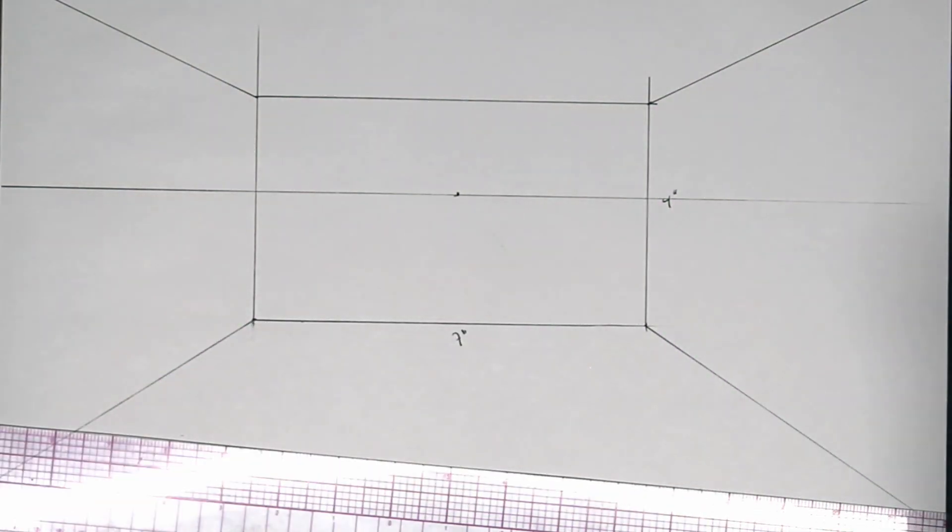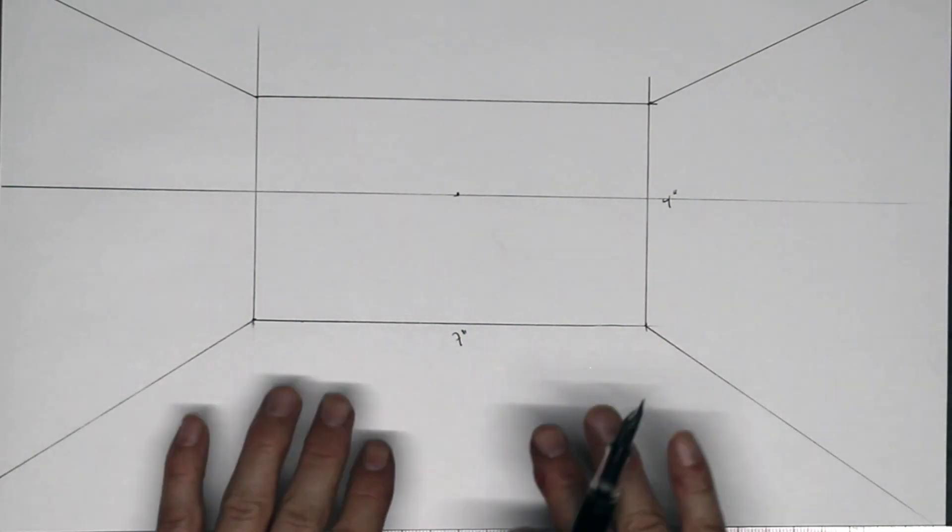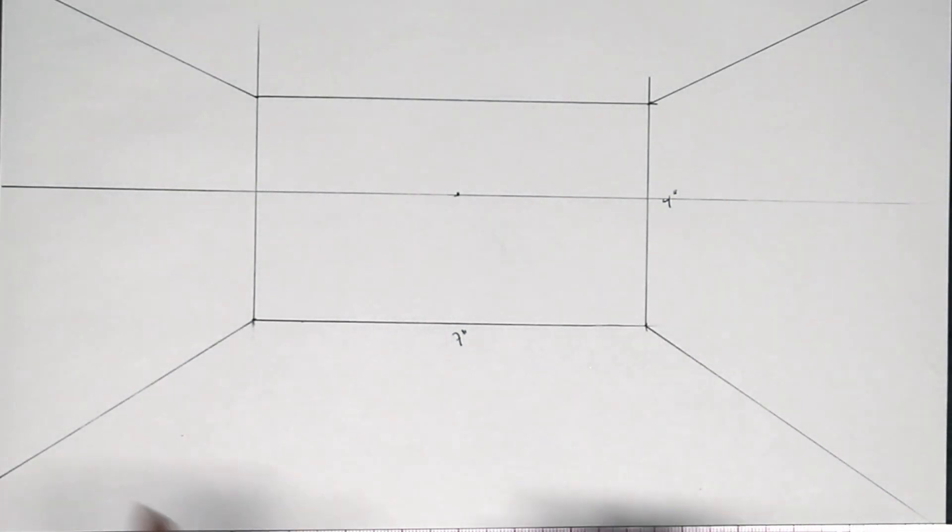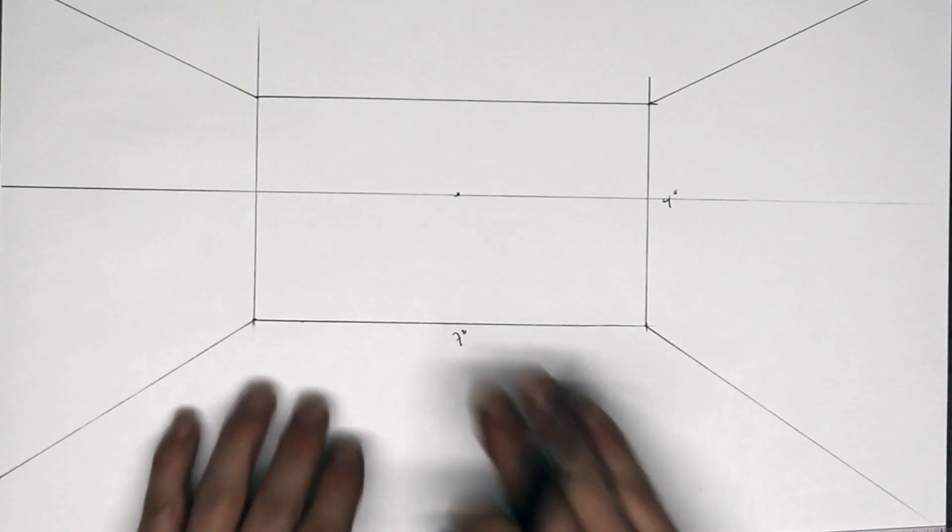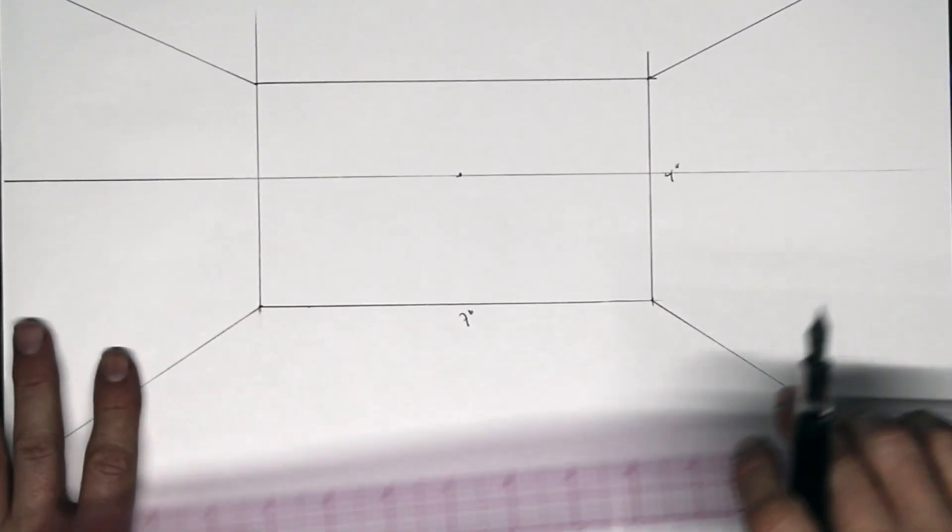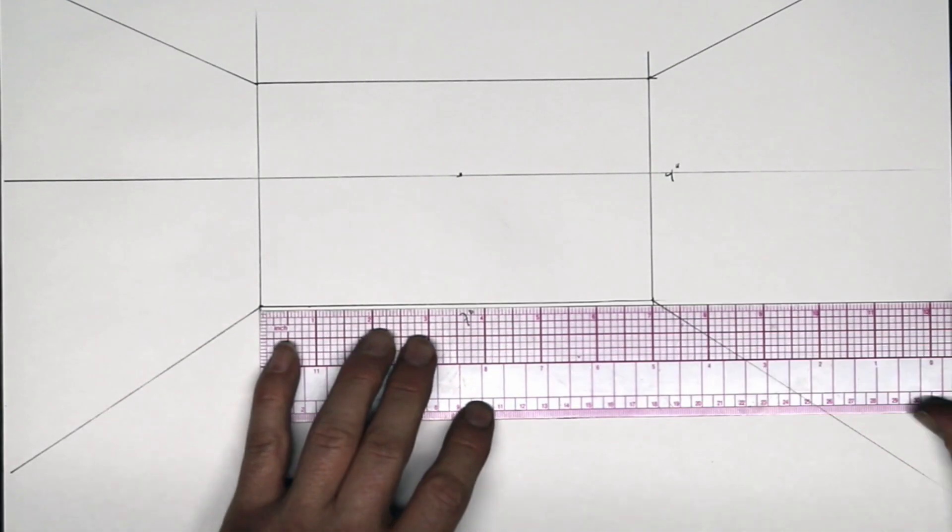Okay, now that we have our room, the next step is to build a room with square tiles on the floor. In order to build square tiles, the first thing we need to do is measure out even increments along the bottom. This is why I had you guys measure out seven inches along the bottom, so you can measure out seven even increments.